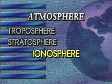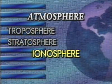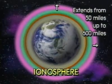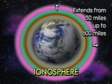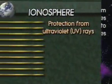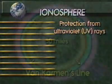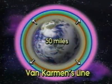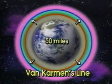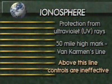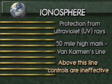The next level up is the ionosphere, ranging from 50 miles to 600 miles. It gets its name from the ionized gas within this layer and provides protection from ultraviolet rays. The 50-mile high mark is known as the Van Kármán line. Above this line, aircraft controls become ineffective and thrust must be used for directional control.